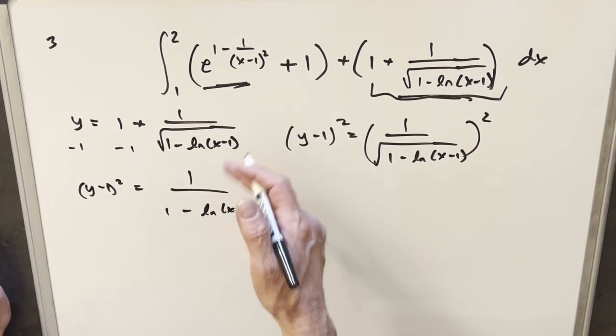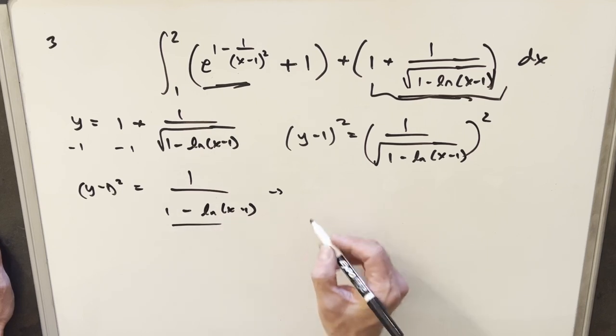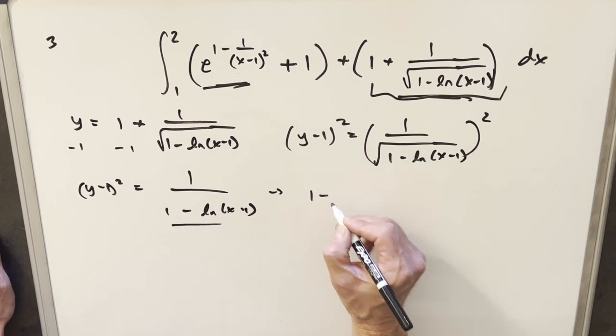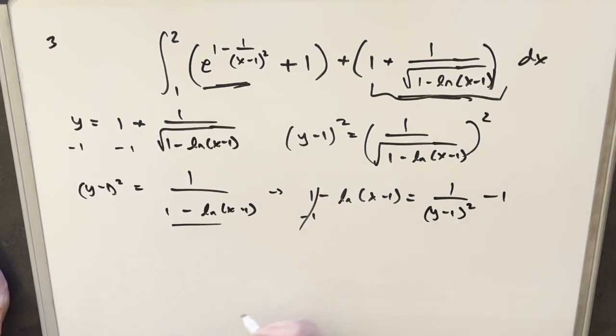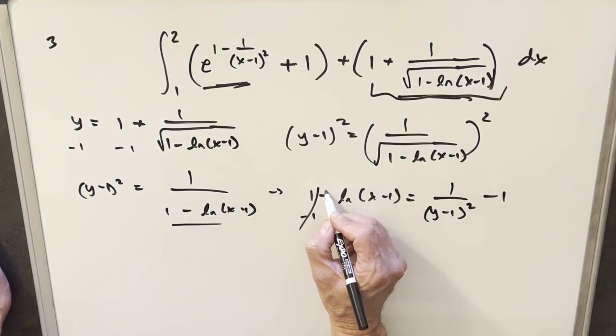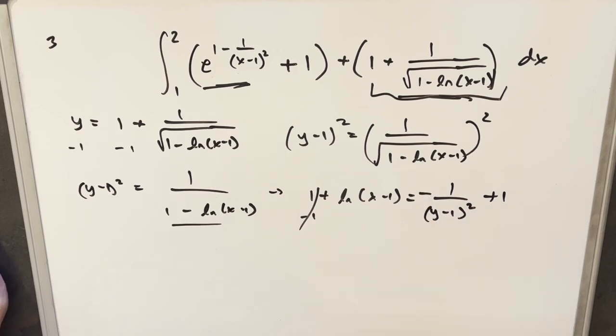Then from here, I can take the reciprocal of both sides to bring this expression into the numerator. So we'll have one minus natural log over here. Then I can subtract the one on both sides again to cancel that. I can multiply by negative one to get rid of that and write this like this.